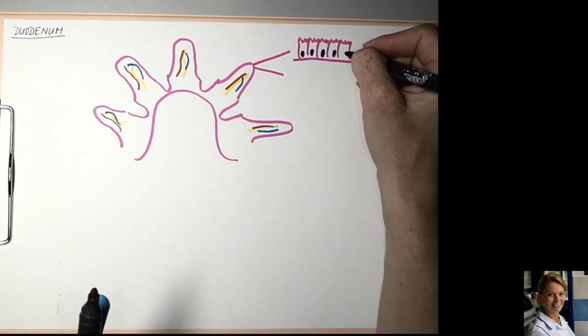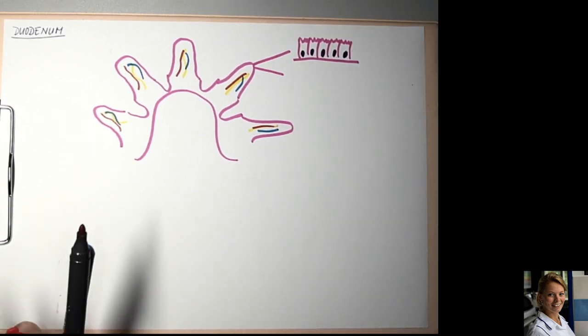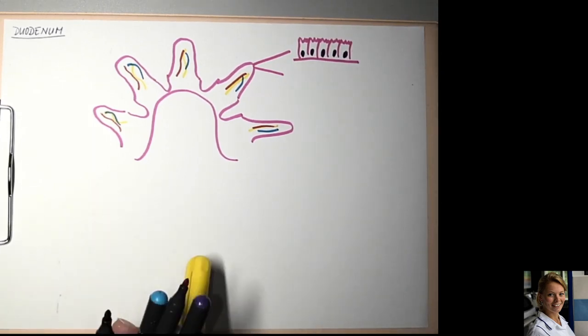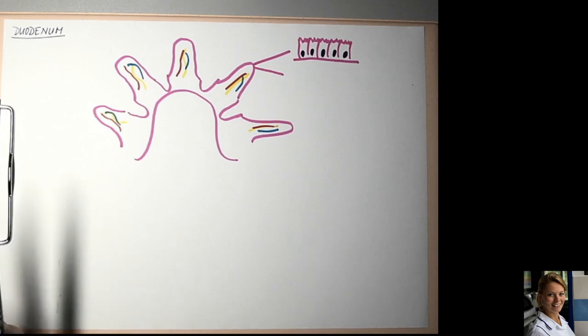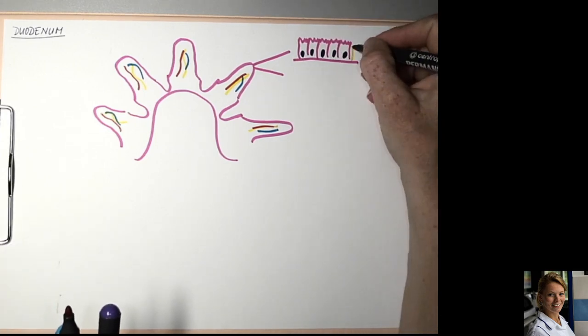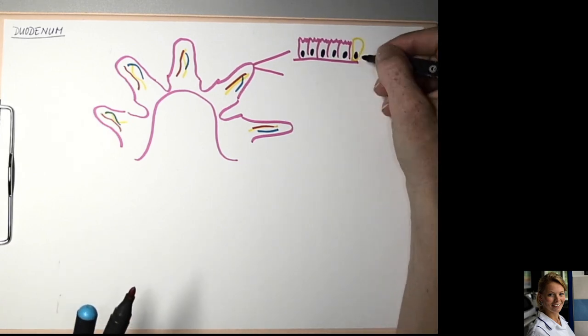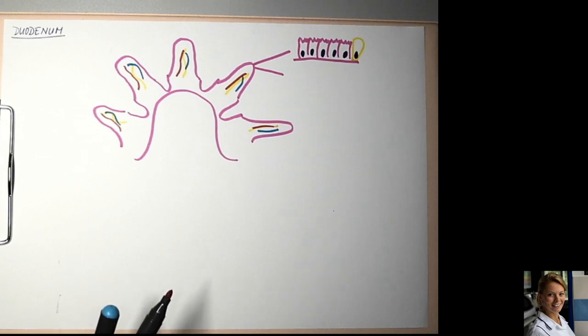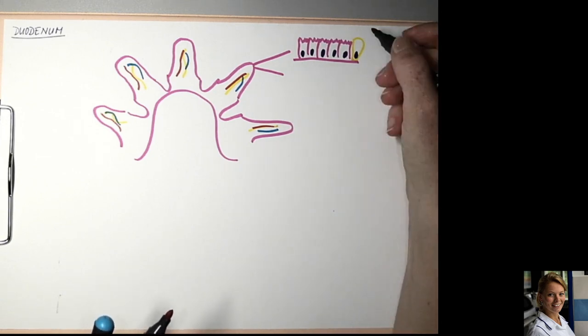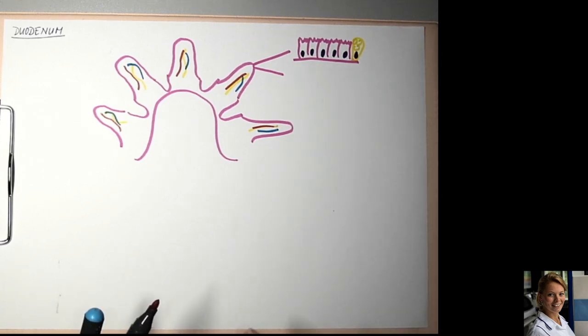Between the enterocytes are goblet cells with peripherally located, basal nucleus and very pale cytoplasm, full of mucus secretion.